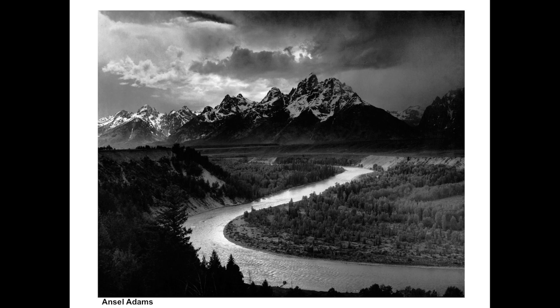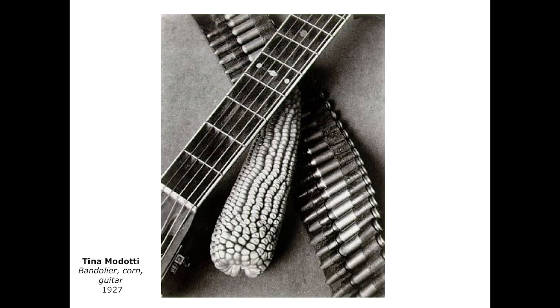Here we can see Ansel Adams' photograph of the Grand Teton Mountains, and part of what makes this image impressive is its sense of scale. You get that as the Snake River leads us back into the background of the picture, wandering back toward these great, magnificently scaled mountains. It's the depth of this space that provides some of that drama.